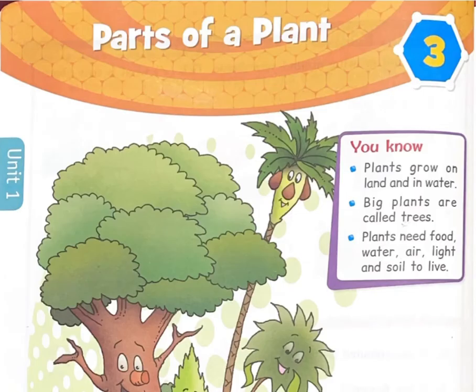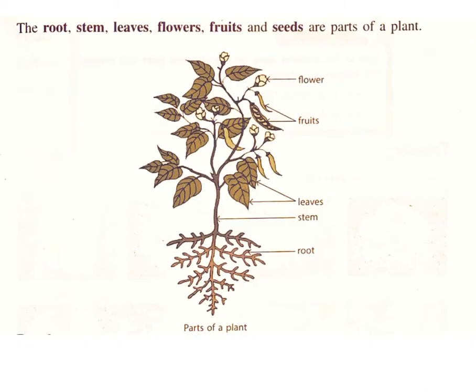Chapter 3: Parts of a Plant. Plants grow on land and in water. Big plants are called trees. Plants need food, water, air, light, and soil to live. You will learn about different parts of a plant: root, stem, leaf, flower, fruit, and seed. The roots, stem, leaves, flowers, fruits, and seeds are parts of a plant.